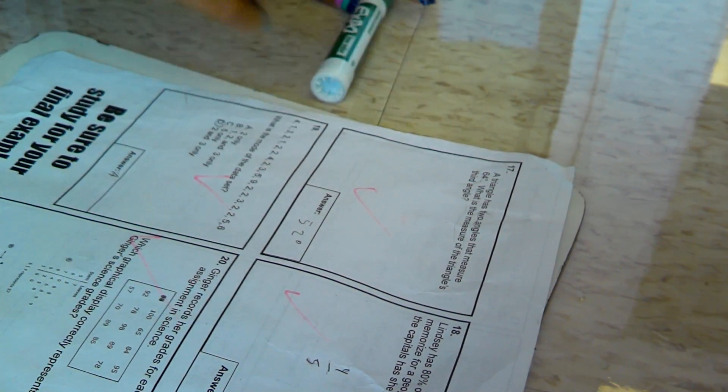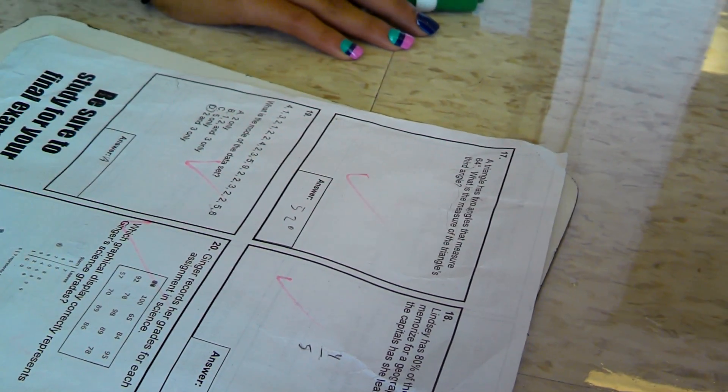Not the temperature, the measure. What is the measure of the triangular third angle? It's 52 degrees, because you need to add the measure for your angle, so it's 52.